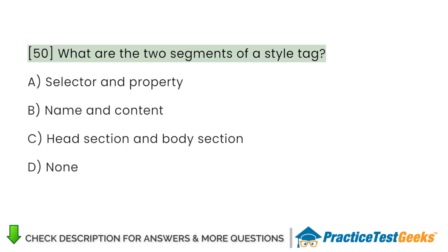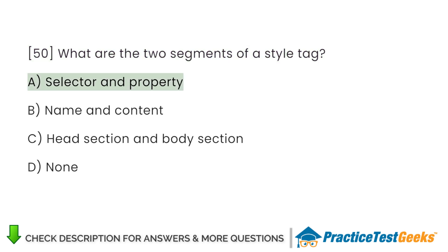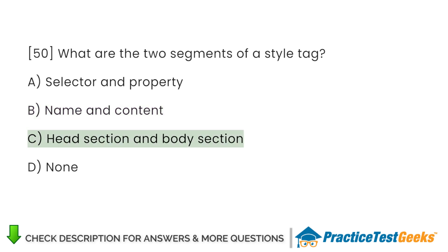What are the two segments of a style tag? A. Selector and property. B. Name and content. C. Head section and body section. D. None.